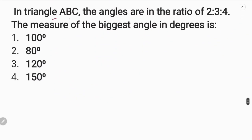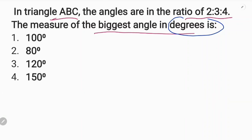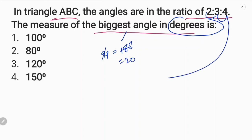In triangle ABC, the angles are in the ratio 2:3:4. The biggest angle is in degrees. 4 minus 3 is equal to 7, 7 minus 2 is equal to 8. Wait — actually the sum of angles of a triangle is 180. The biggest angle: 2 plus 3 plus 4 equals 9 parts. The biggest angle corresponds to 4 parts, which is the largest.